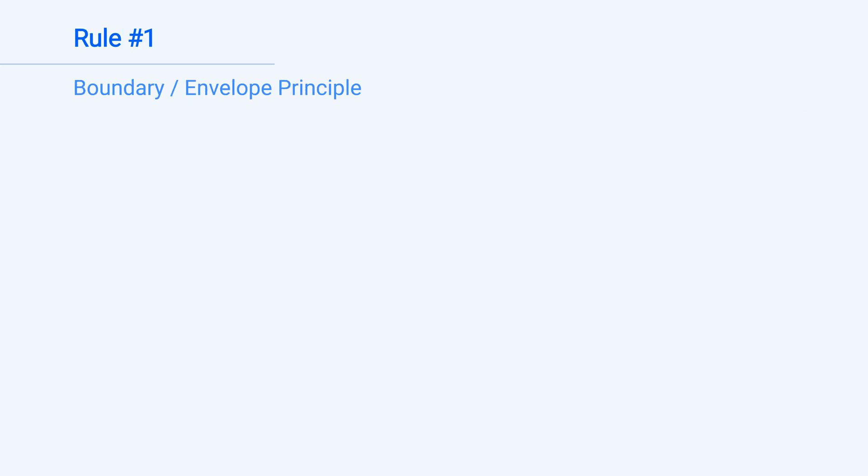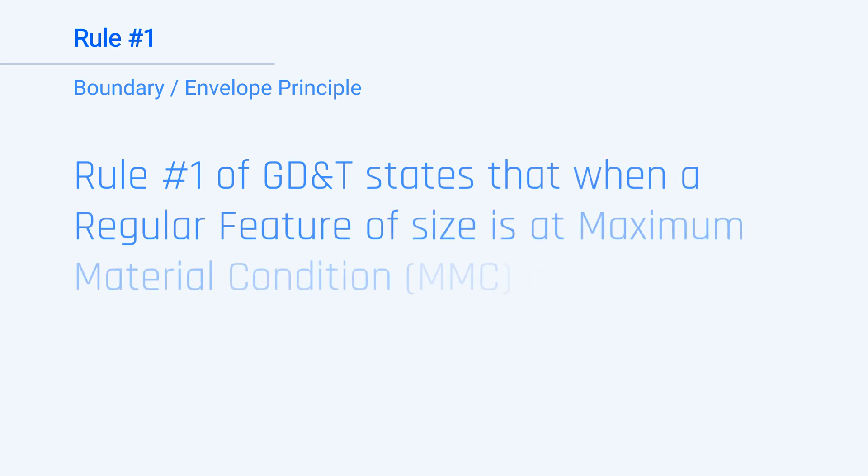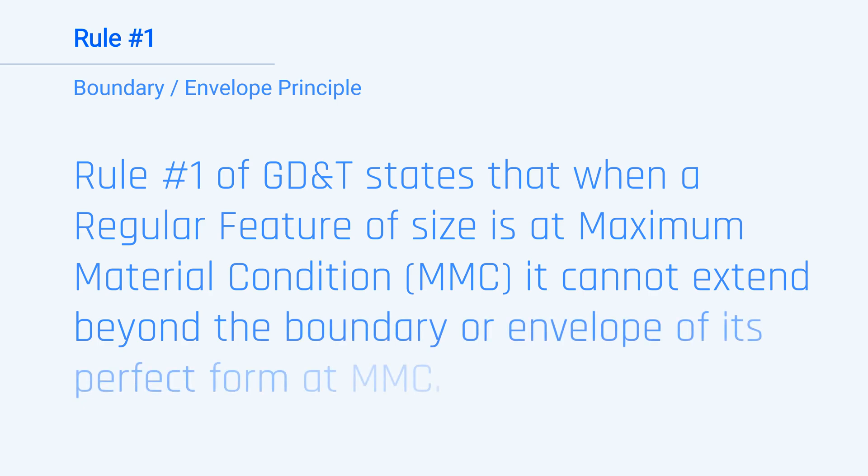Let's now recap our definition. Rule one of GD&T states that when a regular feature of size is at maximum material condition, it cannot extend beyond the boundary or envelope of its perfect form at MMC.